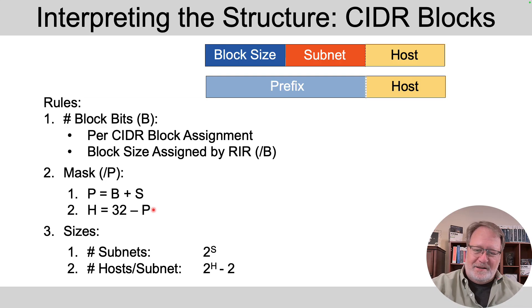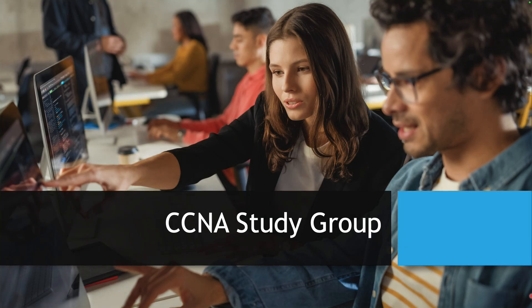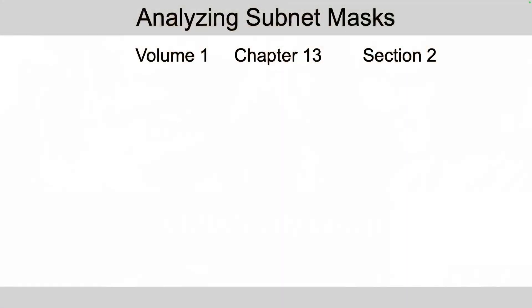Then the host bits is always 32 bits minus your subnet mask's prefix length. So now we're back to the same old math here. So in effect, we're replacing the number of network bits with the block size bits that were part of your assignment of your CIDR block.